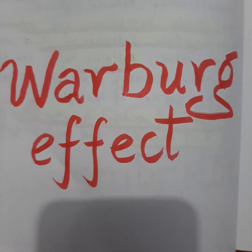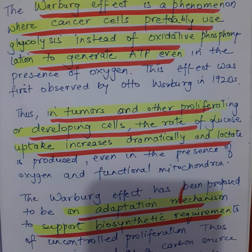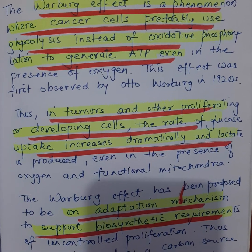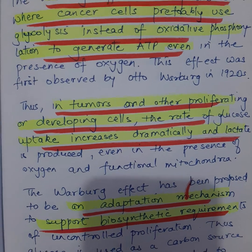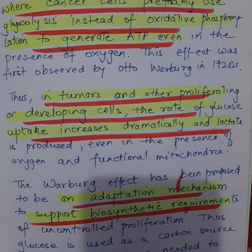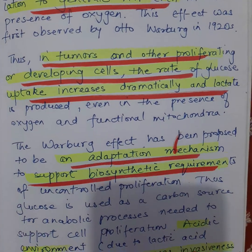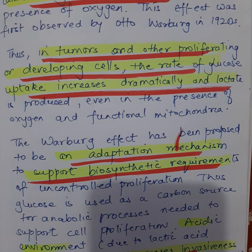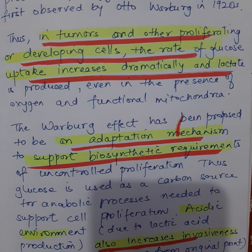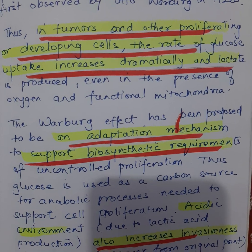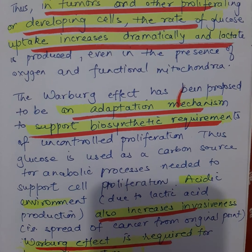The Warburg effect is a phenomenon where cancer cells mainly use glycolysis instead of oxidative phosphorylation to generate ATP, even if oxygen is present. This effect was first observed by Otto Warburg in the 1920s. In tumors and other proliferating or developing cells, the rate of glucose uptake increases and lactate is produced even in the presence of oxygen and functional mitochondria.